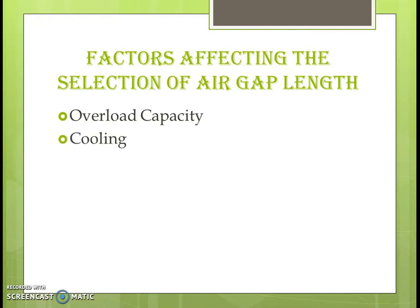The next factor is cooling. When we keep a larger air gap length, the area available for heat dissipation will be large. We have rotor copper losses, stator copper losses, and core losses. When heat is generated due to these losses, we require heat dissipation, and for better ventilation, if the air gap length is larger, we have a better cooling effect. Then we have pulsation loss — to reduce pulsation loss, we have to keep a larger air gap length.